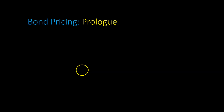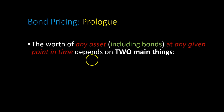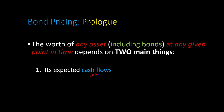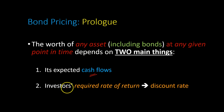Before I get deep into bond pricing, I want you to appreciate something that is a central principle or a central tenant of finance, and that is this: the worth of any asset, including bonds and stocks as well, at any given point in time depends on two main things. One, its expected cash flows, and second, the investor's required rate of return, which we also call the investor's discount rate.